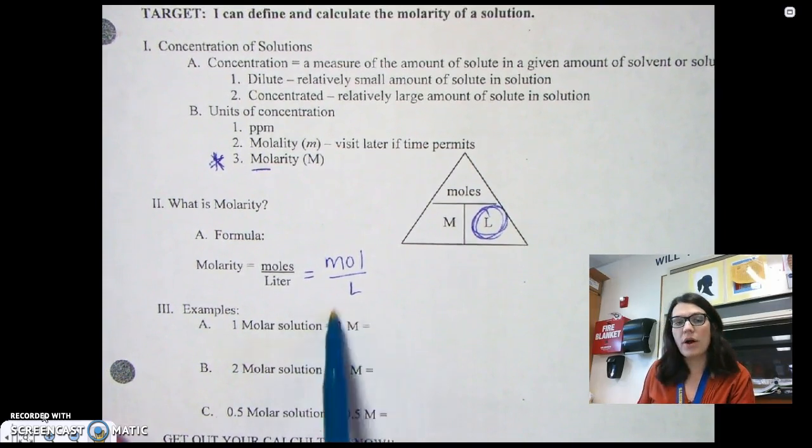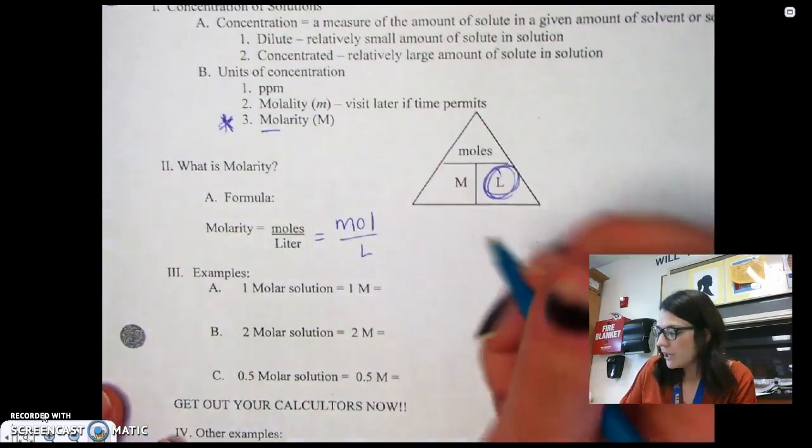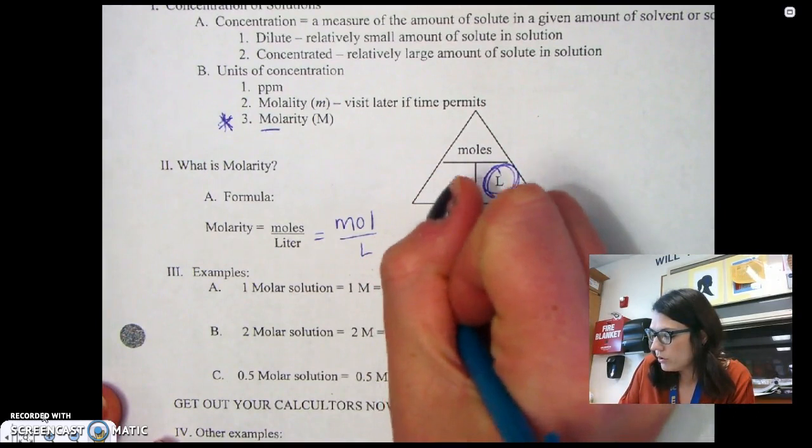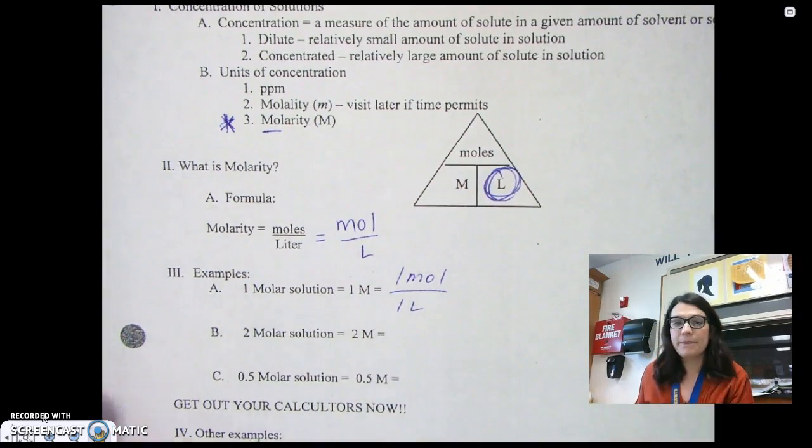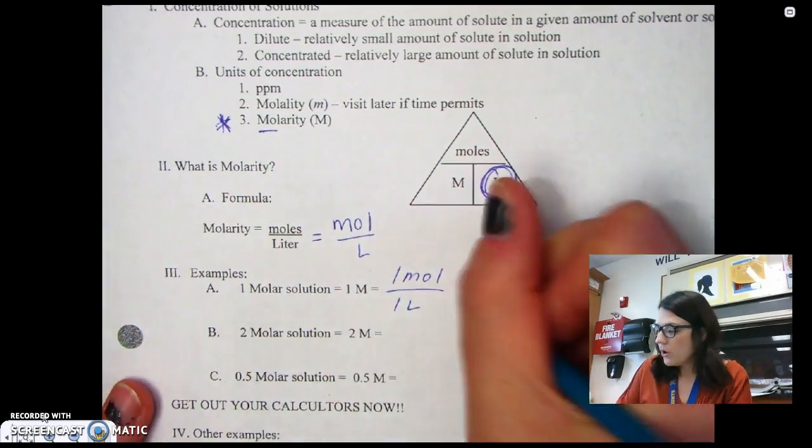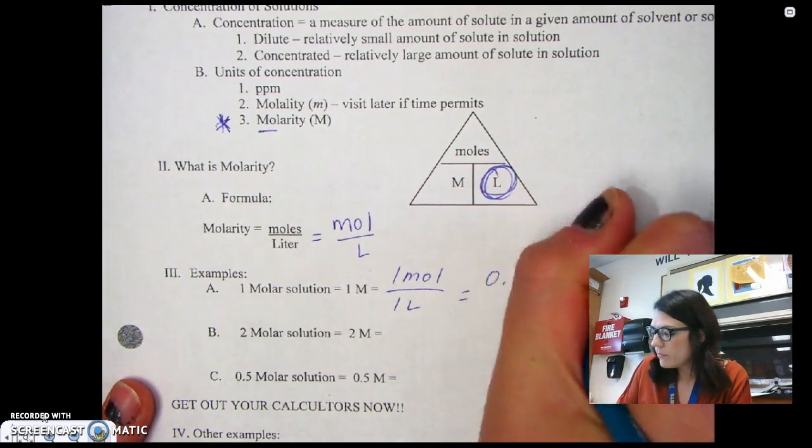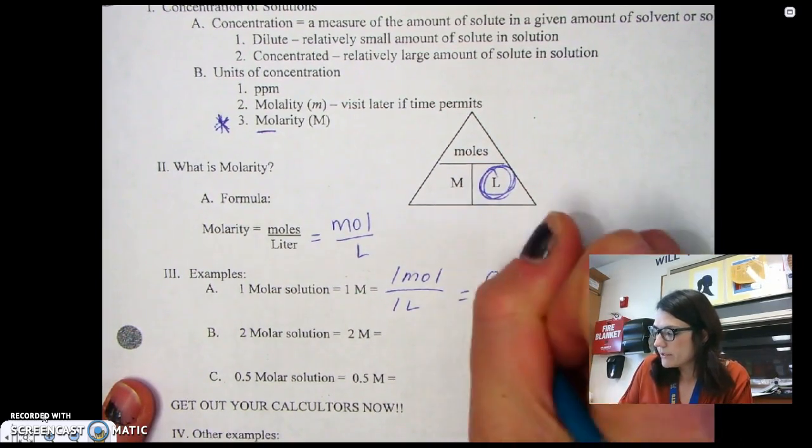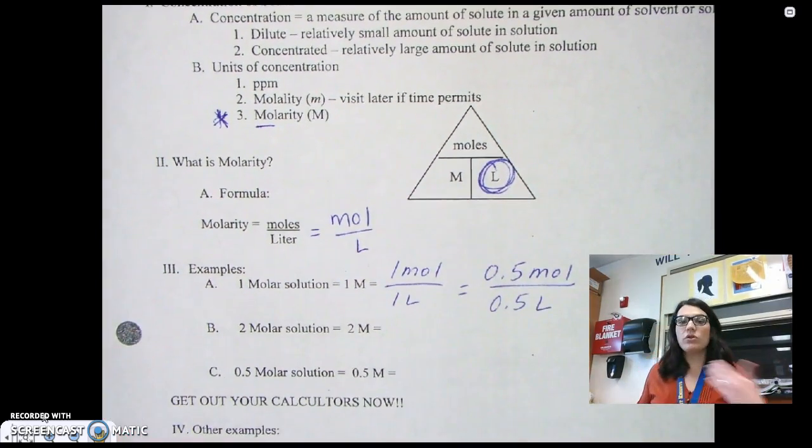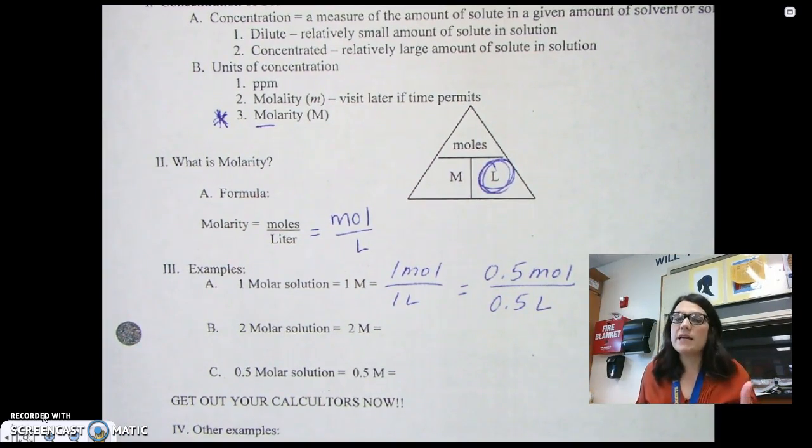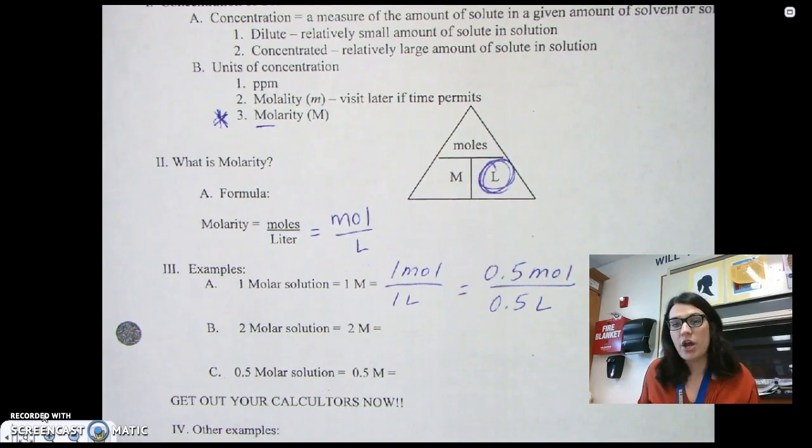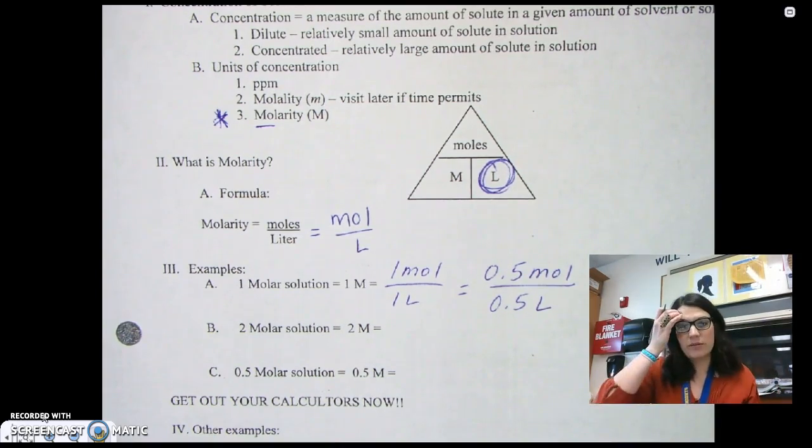What's one way that I could get a one molar solution? Well, I could do one mole divided by one liter. That gives me one molar. What if I do 0.5 moles divided by 0.5 liters? That will also give me a one molar solution. You'll notice any time to have a one molar solution, you need to have the same number on top as you do on the bottom.